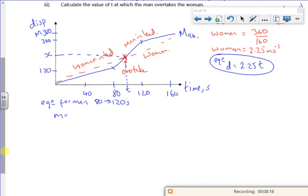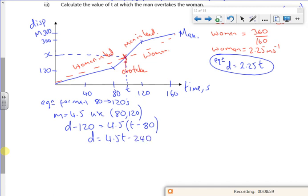So the gradient is 4.5. If I use 80 comma 120, then I've got d minus 120 equals 4.5. d for distance, t for time, times t minus 80. Make that d equals. So 4.5 times t minus 80, 4.5 times minus 80 is minus 360, plus 120 is minus 240. It's been messy this actually. Put these together.